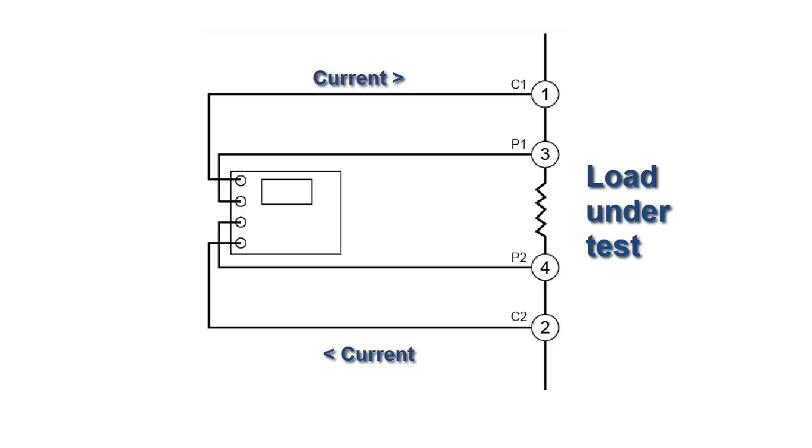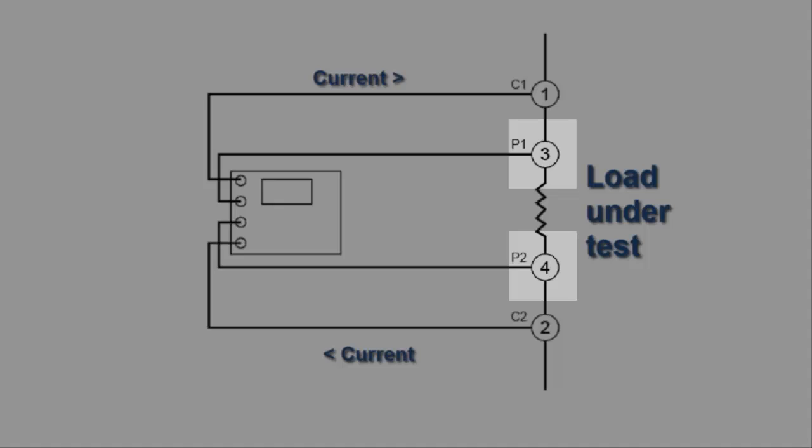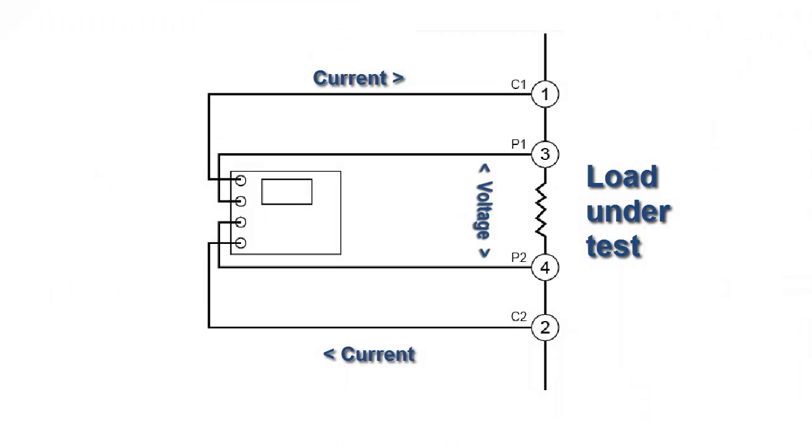In addition, the Kelvin technique employs a second pair of probes, labeled 3 and 4 on the screen, to sense voltage. The second pair is often called the sense probes. The placement of these probes ensures that only the voltage across the load is measured, independent of any resistance contributed by the current or source probes.